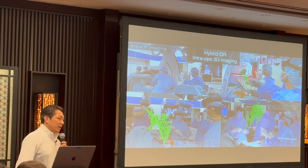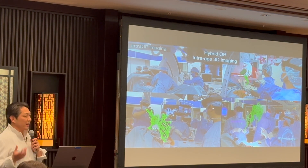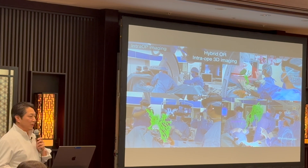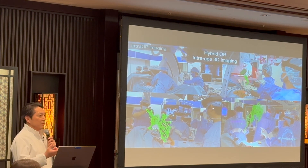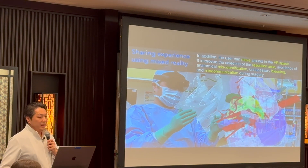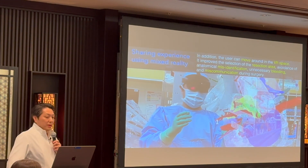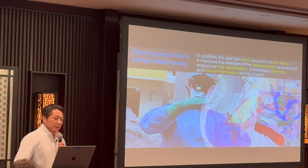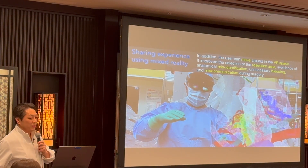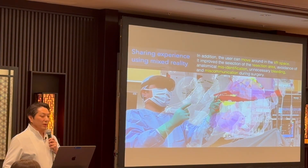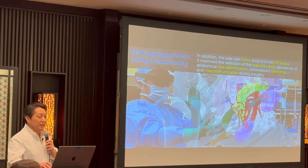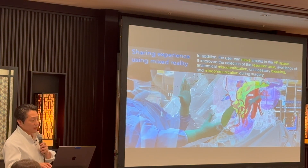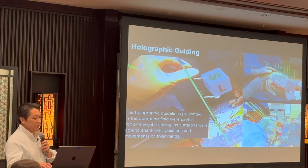In Japan, we can perform CT scans during actual surgery in a hybrid operating room. We calculate real-time CAT scan CT data of the patient. Users can also move around in the VR space. This has improved selection of the resection area, avoidance of anatomical misidentification, unnecessary bleeding, and miscommunication during surgery.